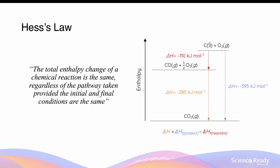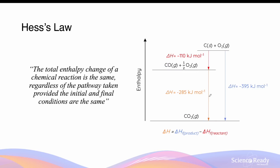Pathway one is direct: carbon solid and oxygen gas are combined directly to form carbon dioxide gas, with an enthalpy change of −395 kJ/mol. Alternatively, the two reactants can first form carbon monoxide plus half a mole of oxygen gas remaining (−110 kJ/mol), and then the carbon monoxide reacts with oxygen to form carbon dioxide (−285 kJ/mol). Whether direct or stepwise, the overall enthalpy change of the two pathways is exactly the same — this is Hess's law.